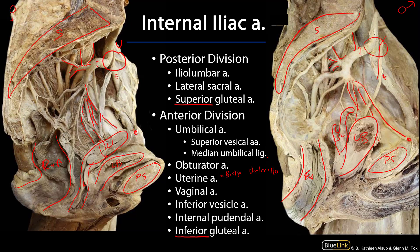This mnemonic helps an OB-GYN understand those relationships quickly and easily so that they don't ligate the ureter during a hysterectomy. Then we have a large trunk here — the middle rectal artery — going down to supply the rectum. Coming from this are also the vaginal artery and possibly an inferior vesicle branch. We can see an inferior vesicle branch coming off that middle rectal artery.